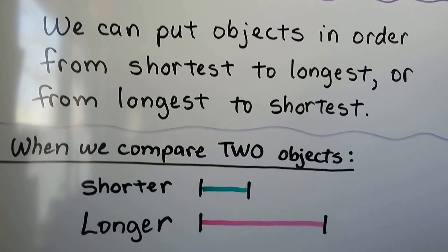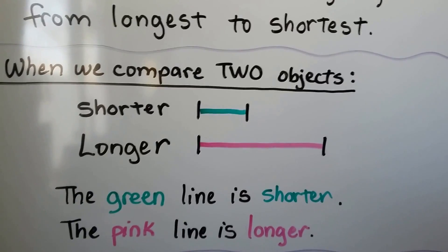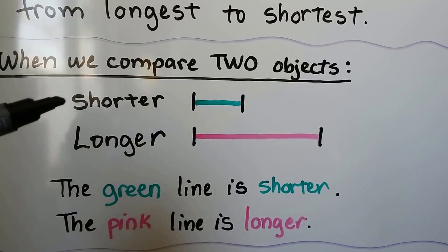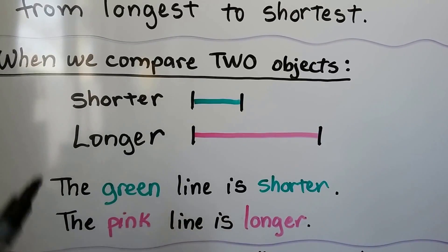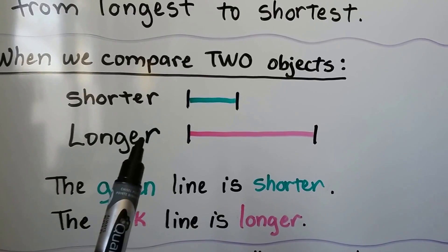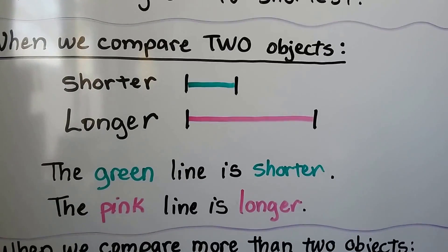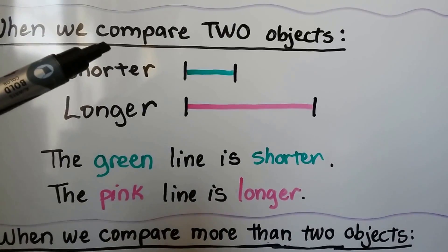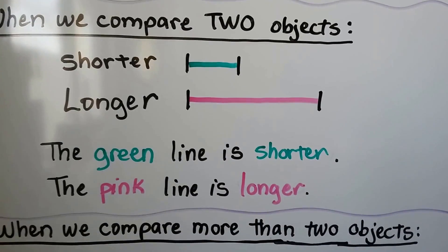When we compare two objects, like these two lines — the green one and the pink one — the green line is shorter and the pink line is longer. The shorter line is the smaller one; the longer line is the larger, bigger one. When comparing two objects, we put an ER at the end of short and long.